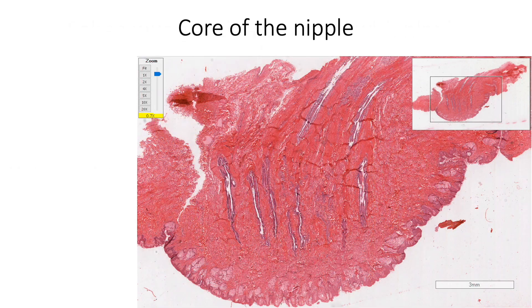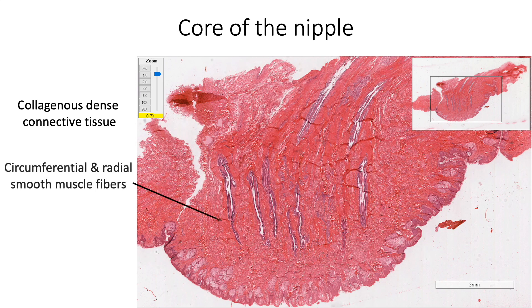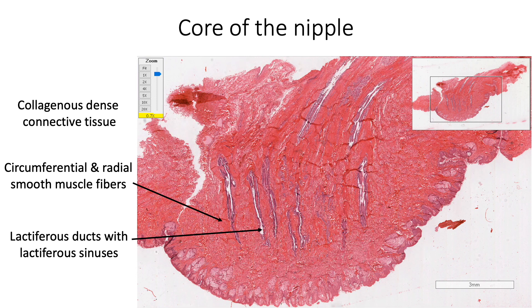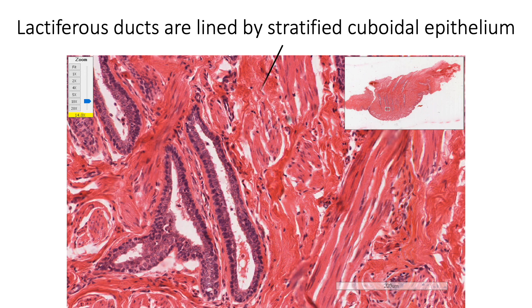The core of the nipple is made up of collagenous dense connective tissue, circumferential and radial smooth muscle fibers, and 15 to 20 lactiferous ducts, which dilate to form lactiferous sinuses just before they open onto the surface. Lactiferous ducts are lined by stratified cuboidal epithelium, which changes to stratified squamous epithelium just before it opens onto the surface. We are also seeing smooth muscle fibers in the core of the nipple here.